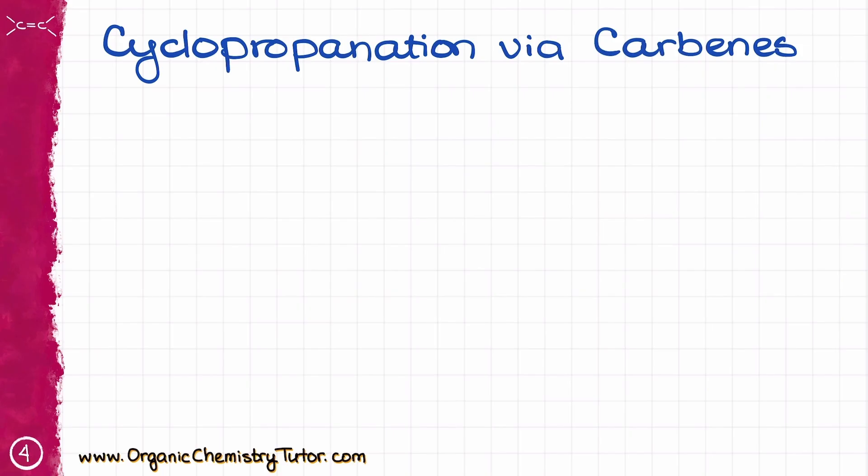Now, there are many different ways how we can make carbenes in organic chemistry. And funny enough, my career as a chemist started with the chemistry of carbenes, so this topic is kind of near and dear to my heart. Within the scope of a typical sophomore organic chemistry, though, we are going to limit ourselves to making our carbenes from chloroform by treating it with sodium or potassium tert-butoxide.